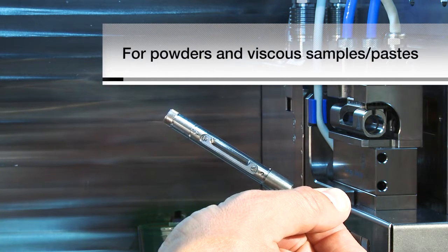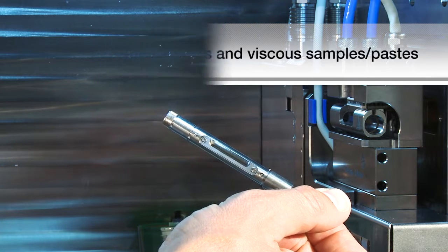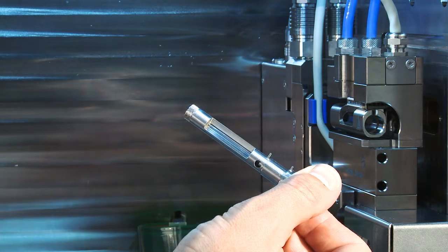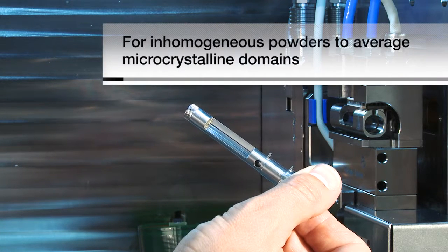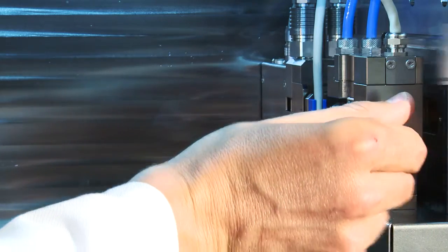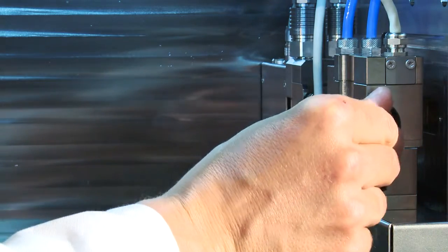The paste cell is used for powder samples and for paste-like or viscous samples. The rotor cell is used for powder samples, especially inhomogeneous ones which are rotated during the measurement.